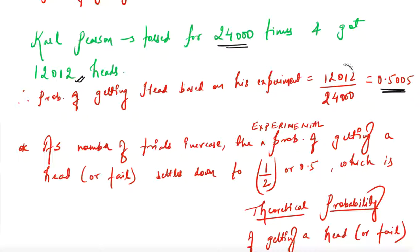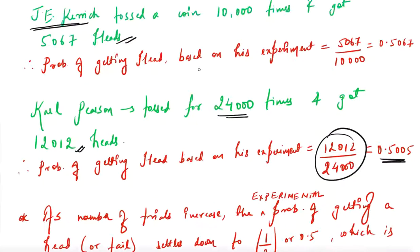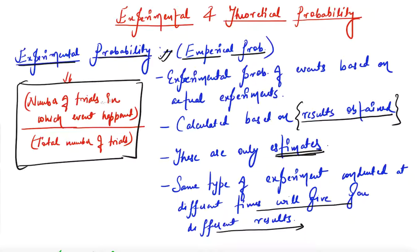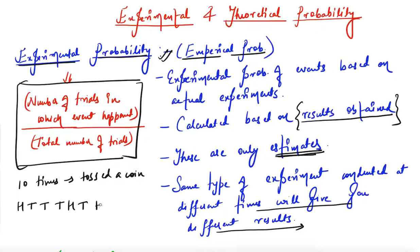The formula for experimental probability is: number of trials in which the event happened divided by total number of trials. For example, suppose I tossed a coin ten times. These are the results I got: Head, Tail, Tail, Tail, Head, Tail, Head, Head, Tail, and Head.